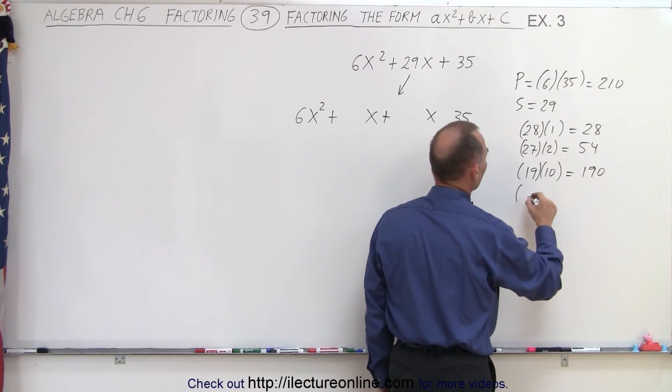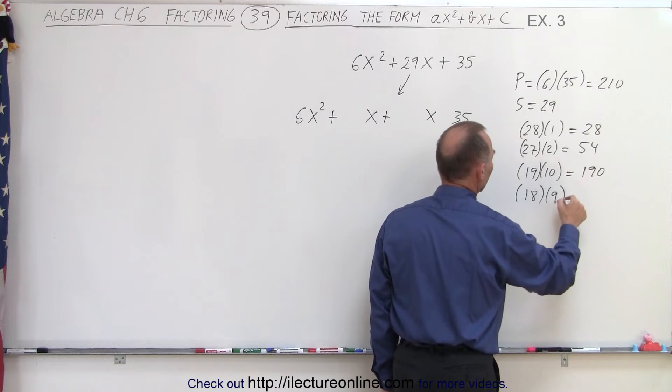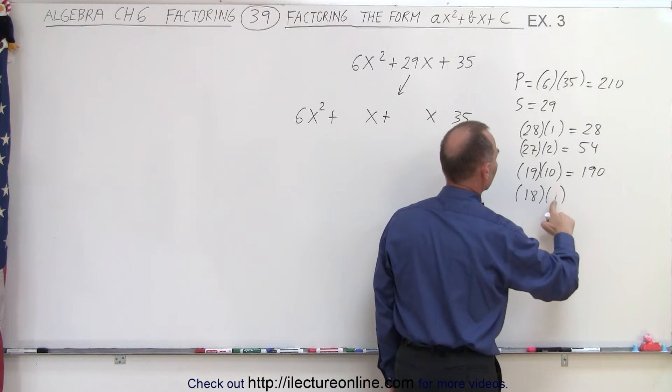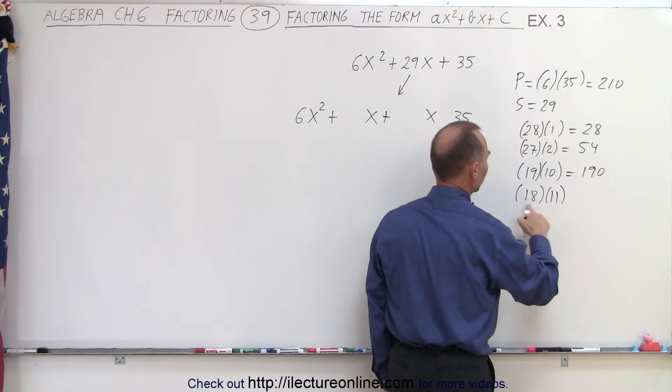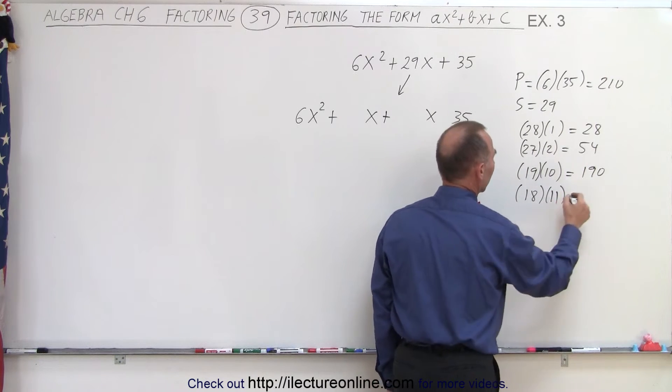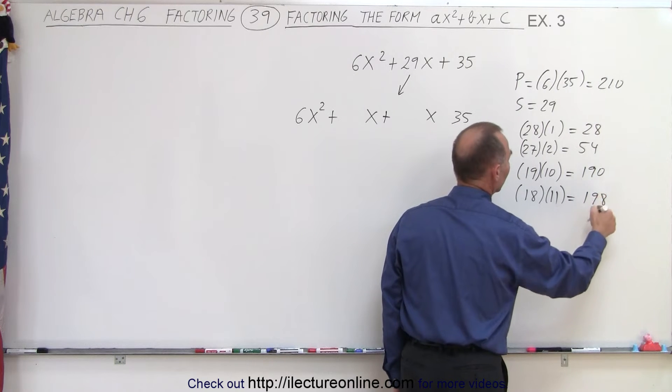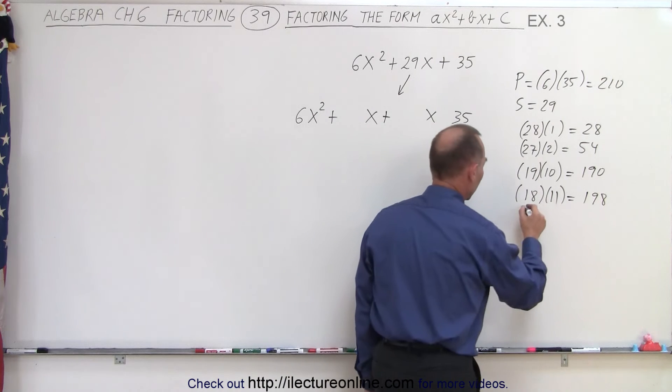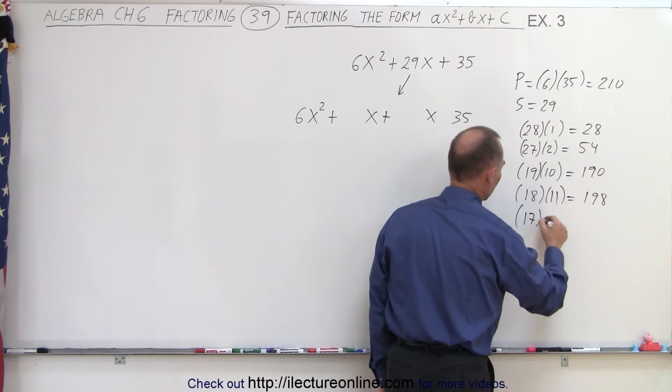How about 18 and 9? When I add those together, that doesn't work. 18 and 11—I need to move up one on this one—that's 198. It looks like I'm still going the right direction, so I haven't passed the right combination. How about 17 and 12?